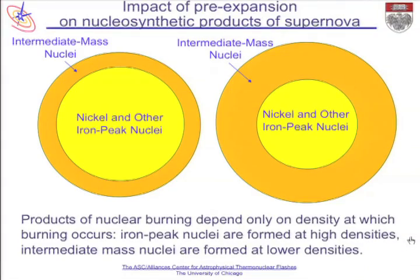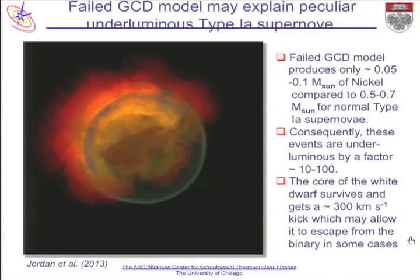If you burn more during the ordinary flame phase, you expand the star and the densities are lower in it, and you get less of the nickel—so they're going to be dimmer supernovae. And if you keep going so that you expand it more and more and they become dimmer and dimmer, eventually you get to a point where that detonation doesn't happen.